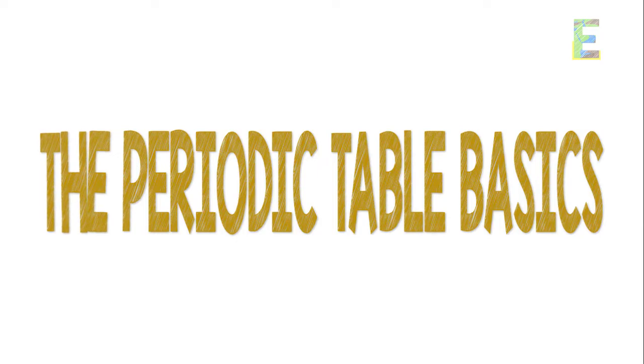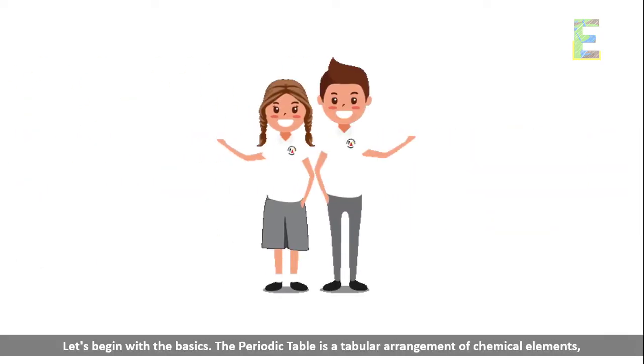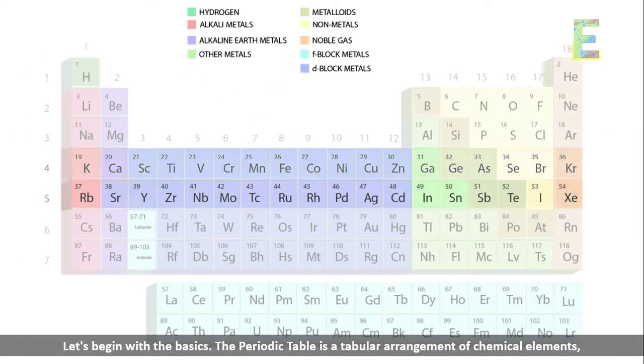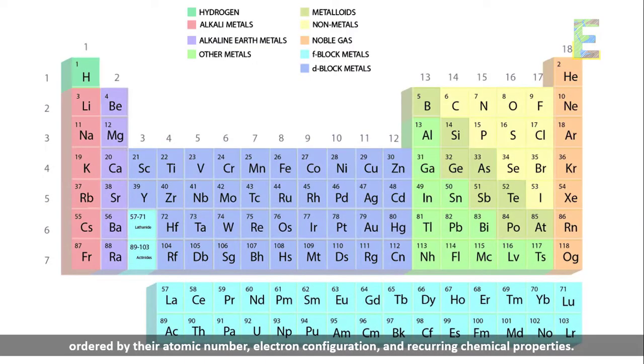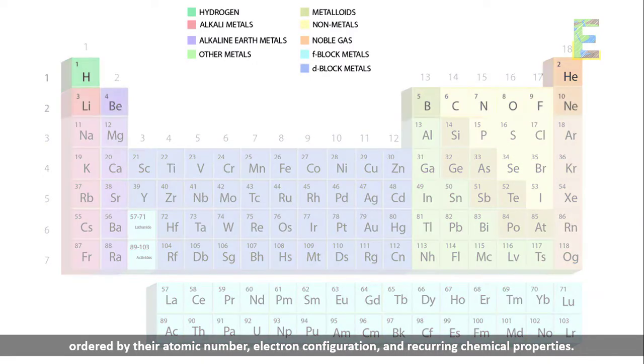The periodic table basics. Let's begin with the basics. The periodic table is a tabular arrangement of chemical elements ordered by their atomic number, electron configuration, and recurring chemical properties.